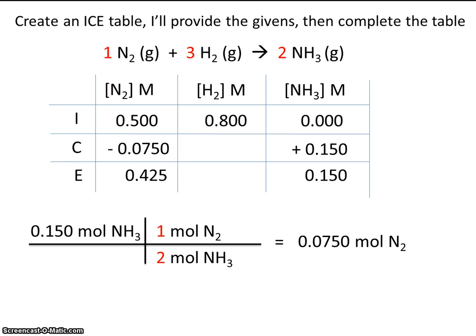Okay. So let's take a look at this relationship, 2 to 3. If we react 0.15 moles of ammonia, how many moles of hydrogen also reacted? That's just a basic stoichiometry question.